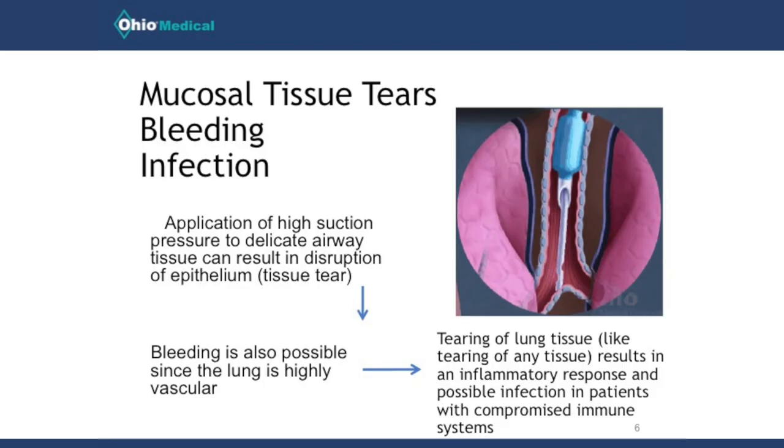Part of the problem with that is it actually potentially causes airway trauma. When you advance the catheter all the way down until you meet that resistance, you're bumping into the carina and the tracheal tissue. Then when you apply suction pressure, it can actually adhere to that tracheal wall, and when you remove the catheter, it will cause a disruption or tear into that tissue.